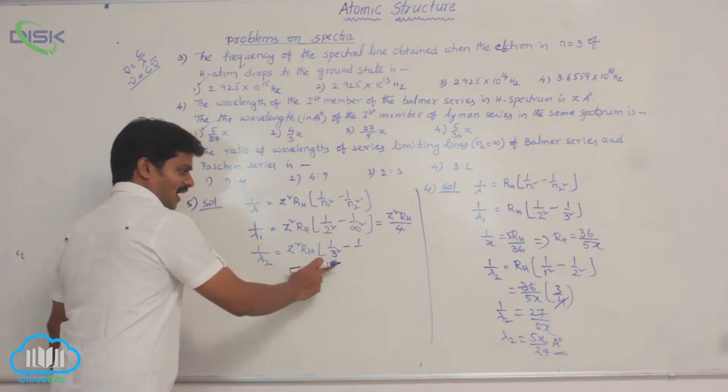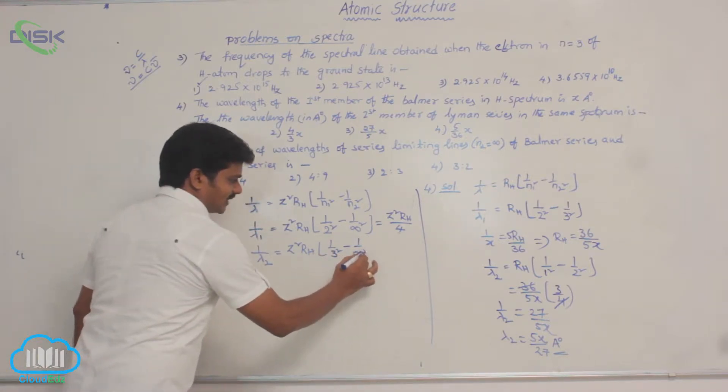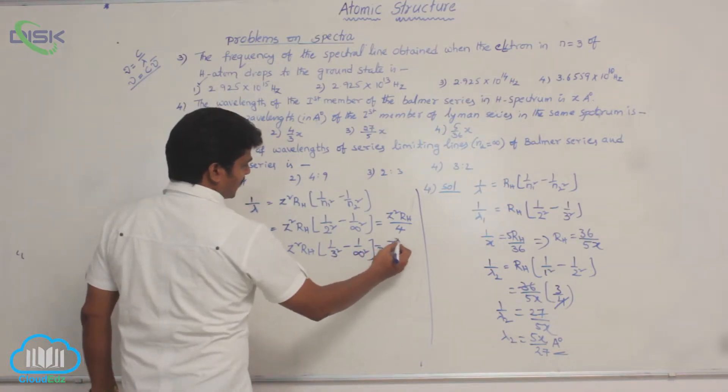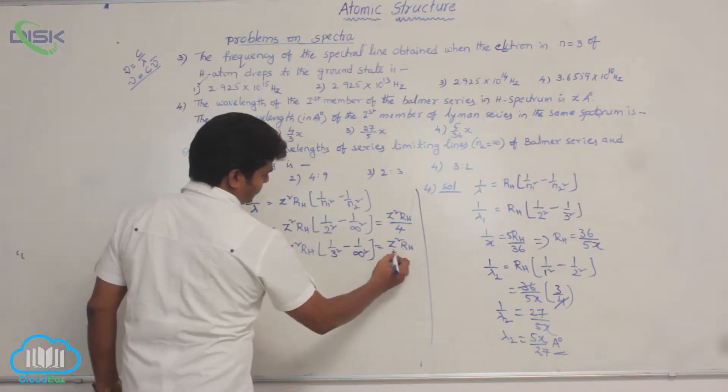So third series, that is why 3 square. Here also limiting line, that is why infinity square. So you will get here Z square into RH by 9.